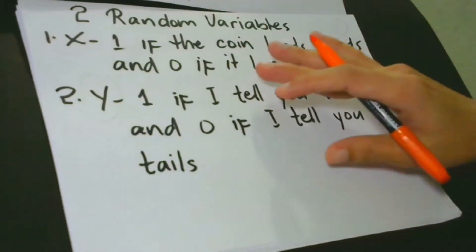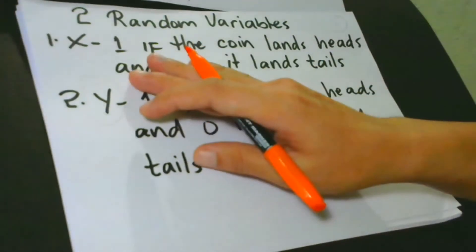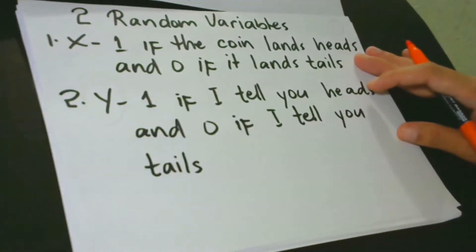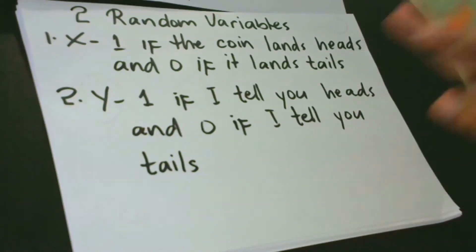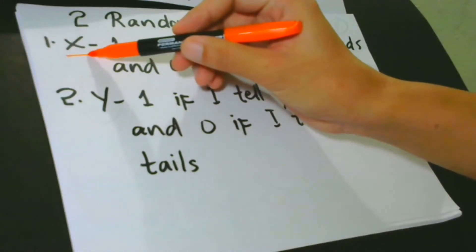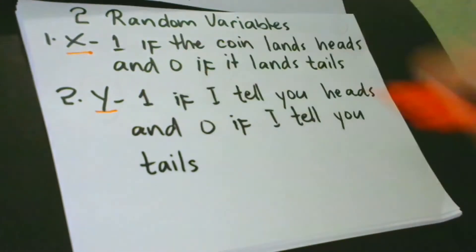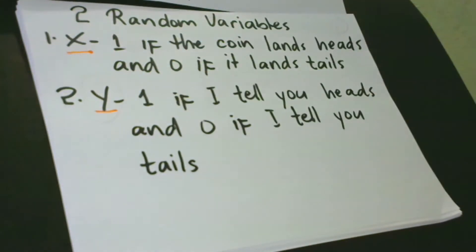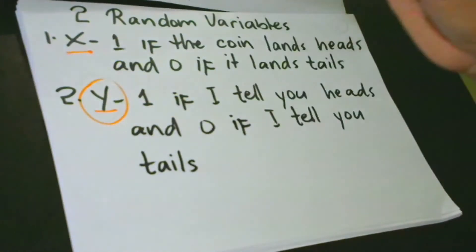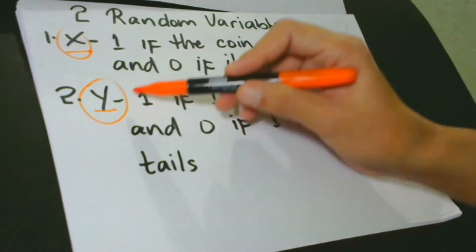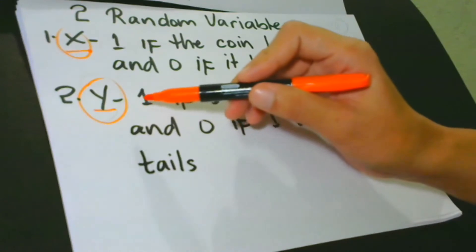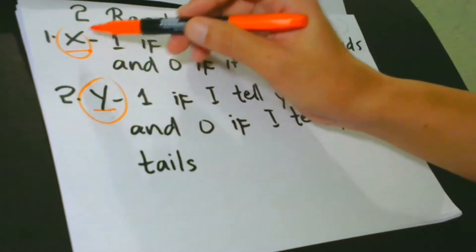We have X = 1 if the coin lands heads and X = 0 if it lands tails. And Y = 1 if I tell you heads and Y = 0 if I tell you tails. X here is the first event and Y is the second event. It means that the outcome of Y is dependent upon the outcome of X — without X, there is no Y. Whatever the result of X would be the result of Y.